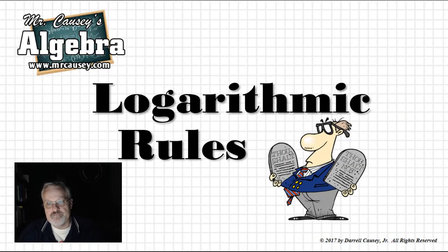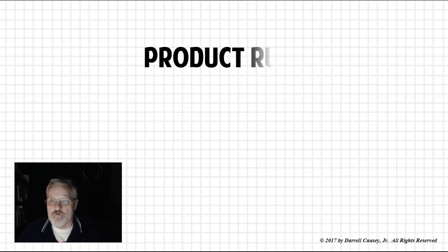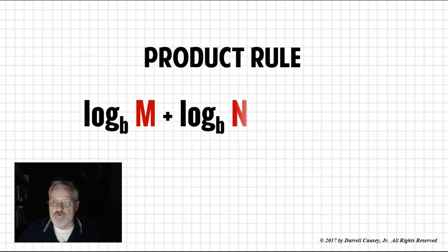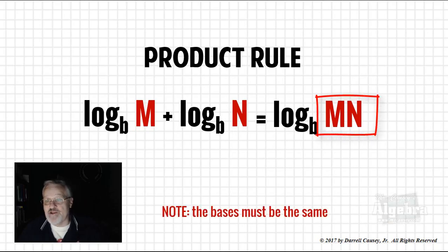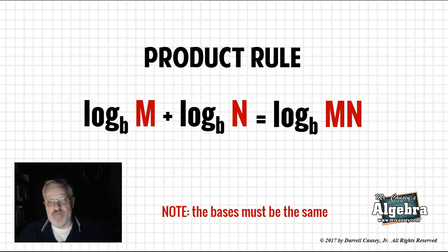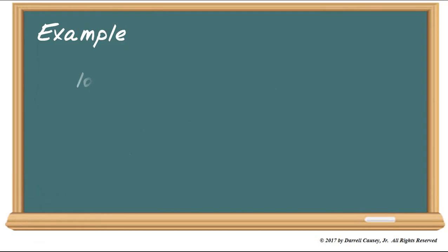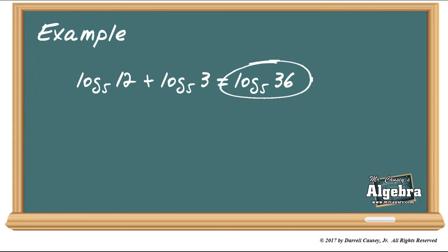With that understanding, let's go and look at logarithmic rules. There's the product rule, which tells us that if you have two logs to the same base, then log b(m) plus log b(n) is going to equal their product, log b(m times n). You need to remember that the bases must be the same. Let's look at an example: log base 5 of 12 plus log base 5 of 3 is going to equal log base 5 of 12 times 3, which is 36. We added two logarithms.